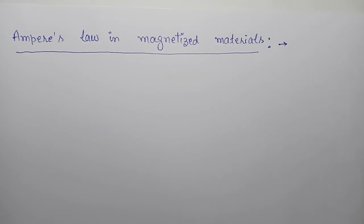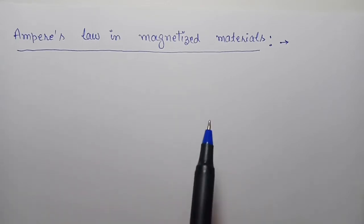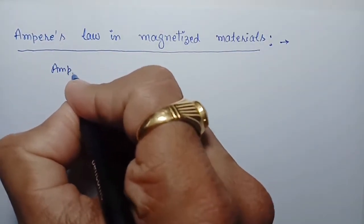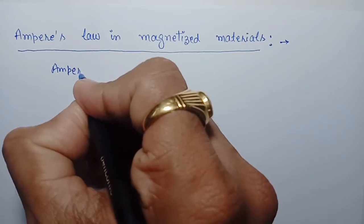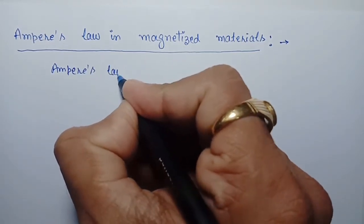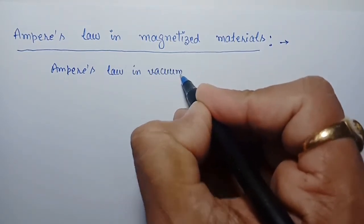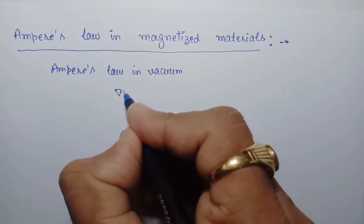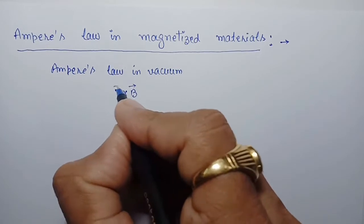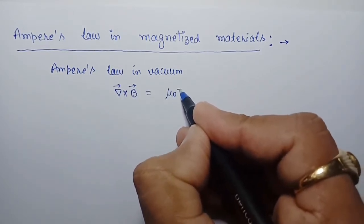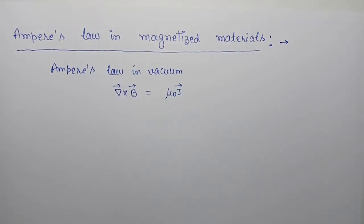Hello everyone. In this lecture we will discuss Ampere's Law in Magnetized Materials. According to Ampere's Law in vacuum, we know that del cross B, that is curl of magnetic field, is equal to mu naught j.